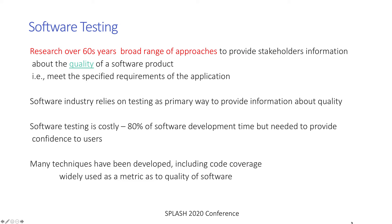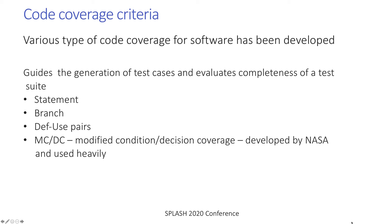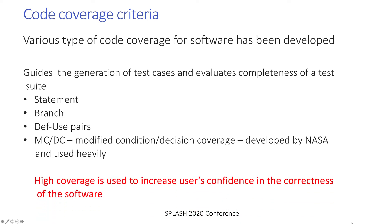Many different techniques have been developed, and a commonly used approach uses code coverage during testing. From the beginning of testing until now, various types of code coverage metrics have been developed. Code coverage metrics do two things: they guide the generation of test cases, and they are used to evaluate the completeness of a test suite. These coverage metrics include statement, branch, def-use pairs, and MCDC — modified condition decision coverage, developed by NASA and still used heavily by them. The general principle is that higher coverage increases users' confidence in the correctness of the software.